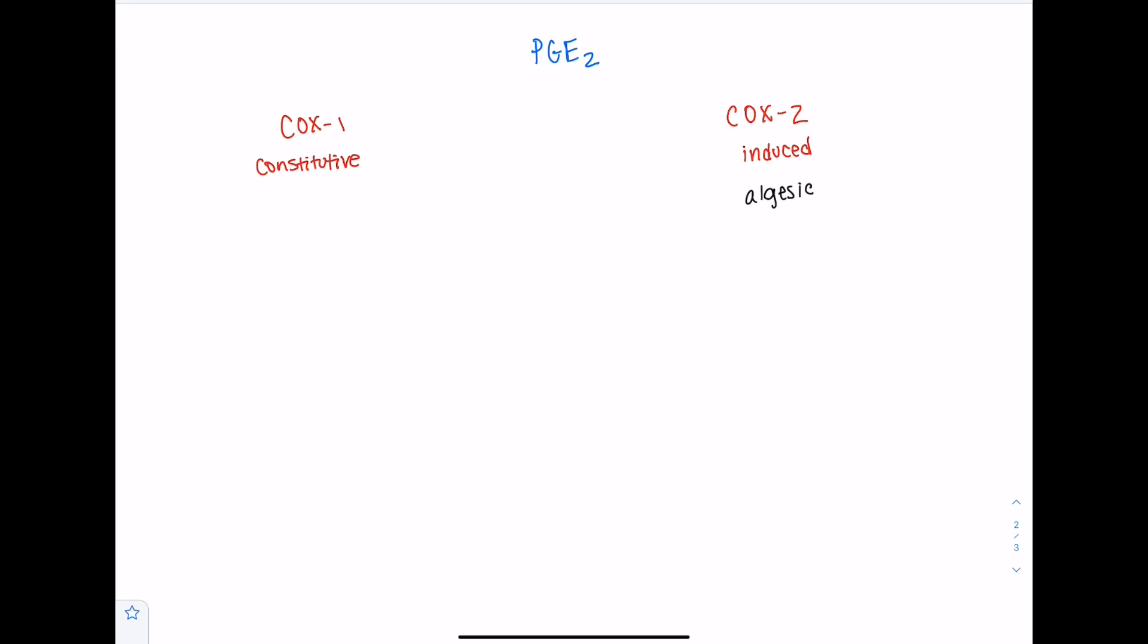Now, the other function of PGE2 that we're going to talk about is in terms of pyresis. Pyresis basically has to do with body temperature. If you have formation of PGE2, you are going to have elevated body temperature. So we're going to write pyresis here.